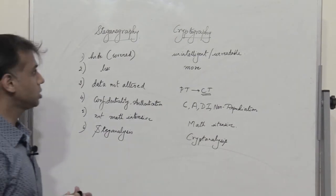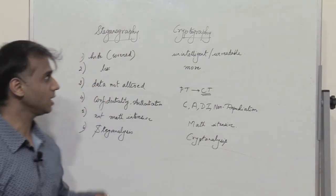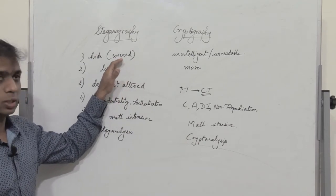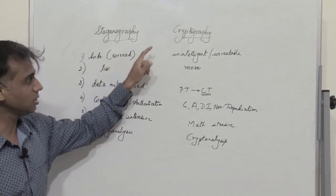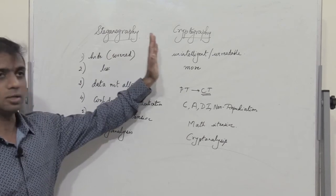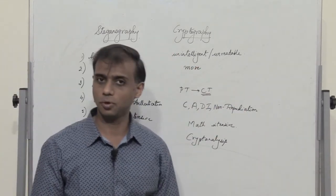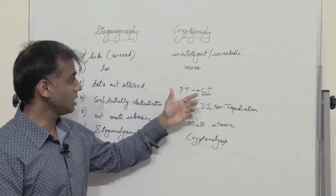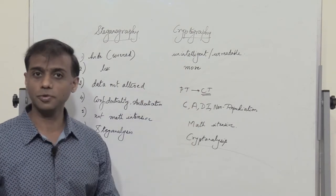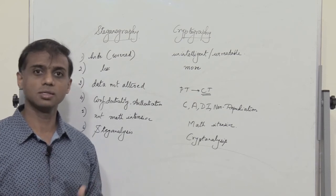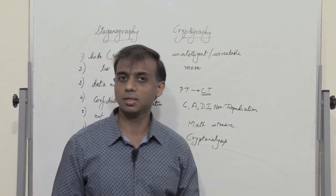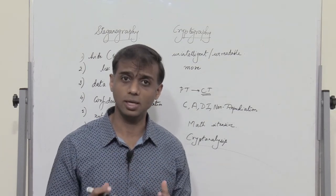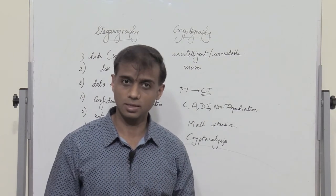The major difference between steganography and cryptography is that in steganography the data itself is covered or hidden, whereas in cryptography the data is converted into an unintelligible format. We can convert plaintext into ciphertext by using two different methods: one is by using symmetric ciphers and the other is by using asymmetric ciphers, which have already been dealt with in detail in previous lecture sessions.